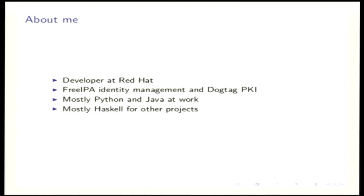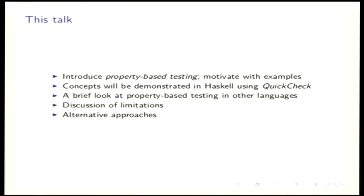Hi, I'm Fraser. This is a talk about property-based testing. I'm a developer at Red Hat, where I work on the FreeIPA identity management system and the Dogtag certificate authority. At work I'm mainly using Python and Java, but in the real world mainly Haskell. I have a lot of Haskell side projects, which is why I'm wearing this shirt. I'm going to introduce property-based testing and motivate it with some examples. Concepts will primarily be demonstrated in Haskell, but hopefully the examples are comprehensible even if you're not already familiar with Haskell. We'll have a brief look at property-based testing in other languages, and I'll conclude with a discussion of limitations and some alternative approaches.